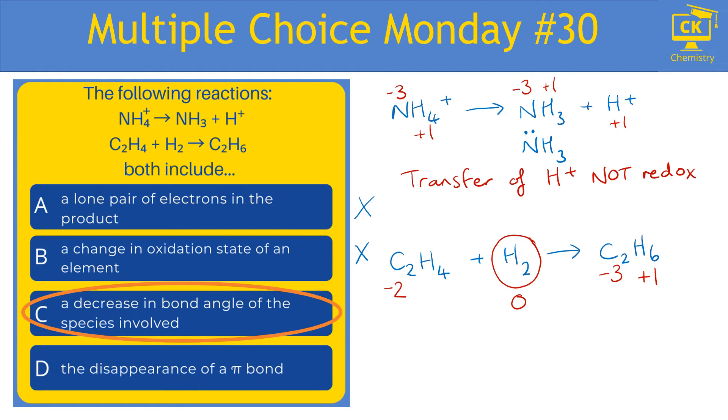What about C? Bond angle, a decrease in bond angles. Well, this does happen in both of them, hence why this is the right answer. So ammonium NH4+ has four bonds and no lone pairs, so we would expect NH4+ to have a bond angle of 109.5 degrees. But in ammonia, we have this lone pair, which is adding a little bit extra repulsion, which means the bond angle is going to be reduced to 107.